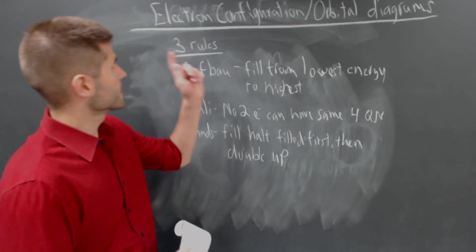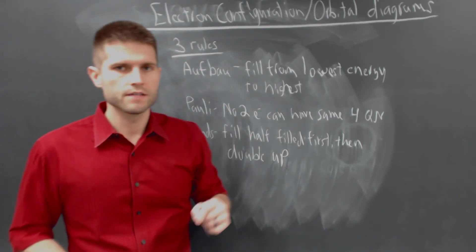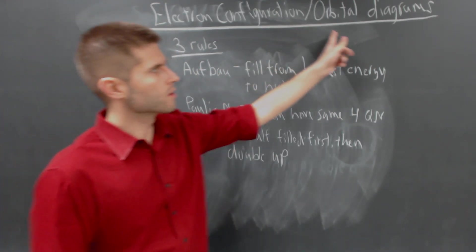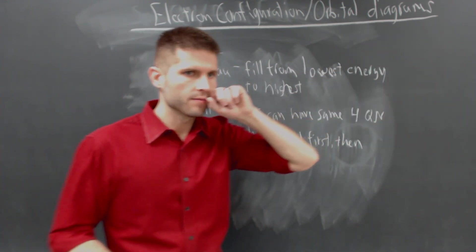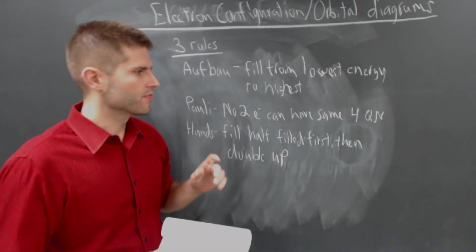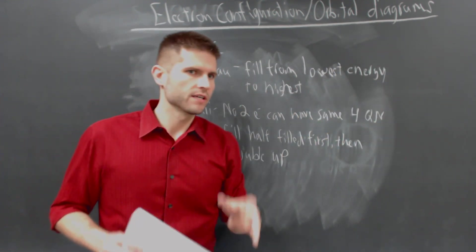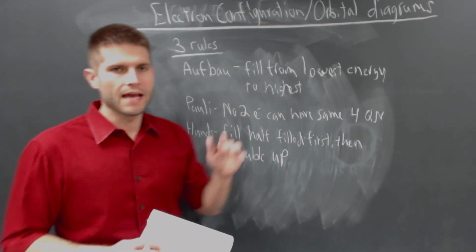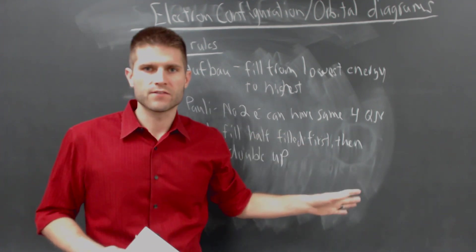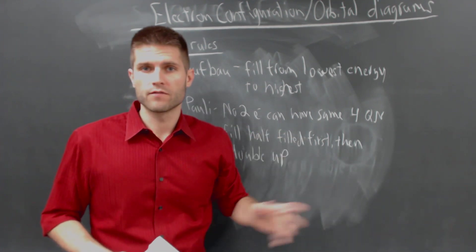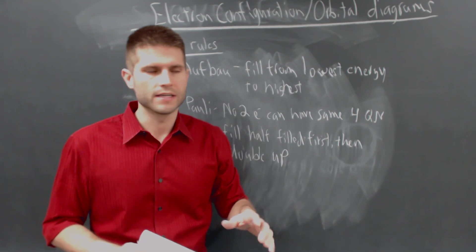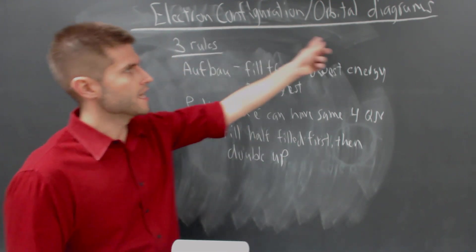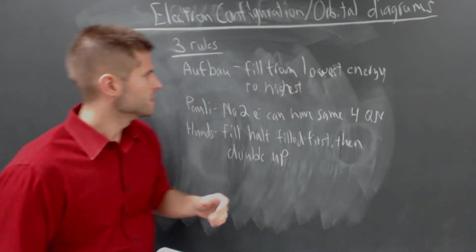Hello. In today's video we're going to be talking about electron configurations as well as orbital diagrams. We're going to be focusing on three different rules, and I'm going to tell you the rules first, and then we're going to go through a few examples of how we use these rules to identify the electron configuration as well as the orbital diagrams.